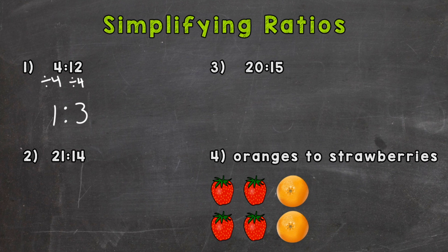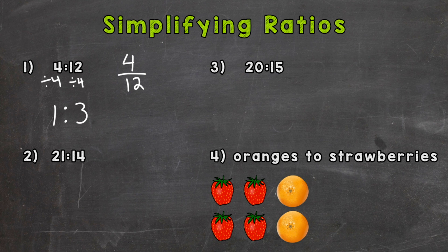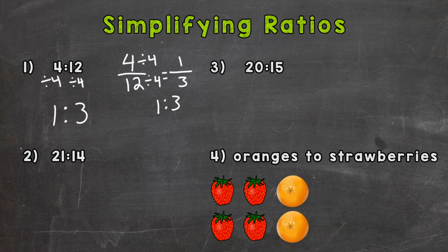For every one of something, there would be 3, and that is equivalent to 4 to 12. Now ratios can be set up as fractions, with the first number — that 4 — as your numerator, and the 12 as your denominator. So if you're more comfortable setting it up as a fraction and simplifying from that fractional form, feel free to do so, and then you can just change it back to whatever way you need to write the ratio. We would divide both by 4 and get 1 to 3.